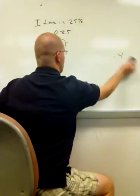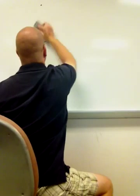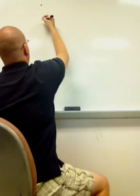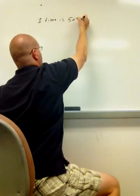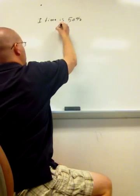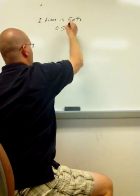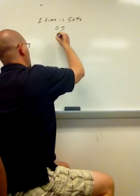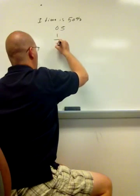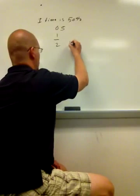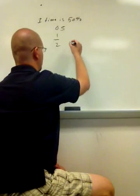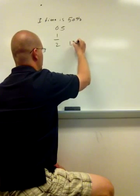Let's do one more here. Let's say that my I time is 50%. So the decimal is 0.5, and that gives me 1/2. So I have two parts to my total cycle time: 1 part, 2 part.